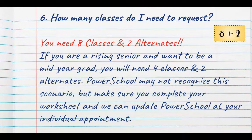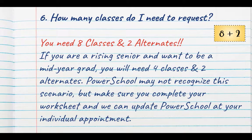How many classes do I need to request? You need 8 classes and 2 alternates. If you are a rising senior and want to be a mid-year grad, you will need 4 classes and 2 alternates. PowerSchool may not recognize this scenario, but please make sure that you complete your worksheet and we can update PowerSchool at your individual appointment.